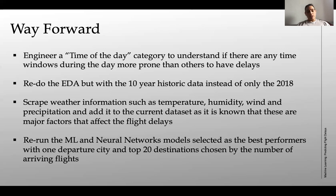And then rerun the ML and the neural networks models selected as the best performance, but now just select one city and the top 20 destinations chosen by the number of arriving flights. Probably the top ones such as Chicago or Atlanta are going to be interesting ones and then try to double check this with my ground truth and have a proper idea of how my models perform.